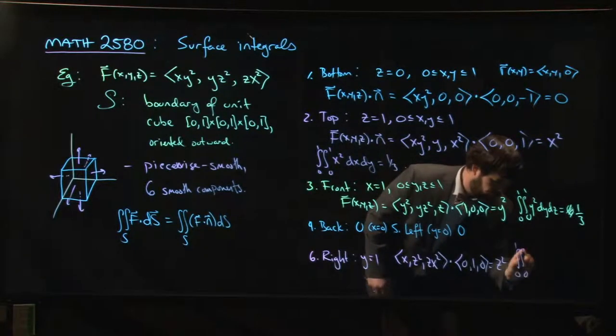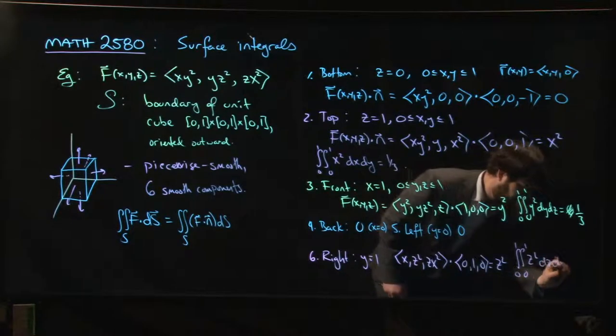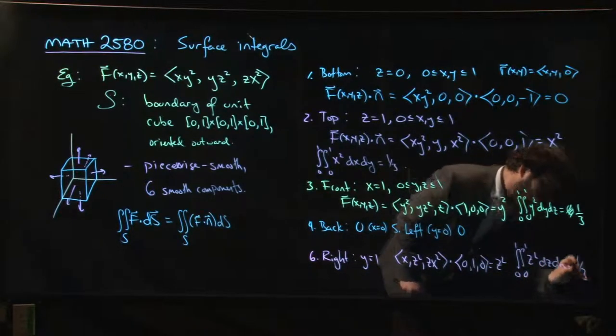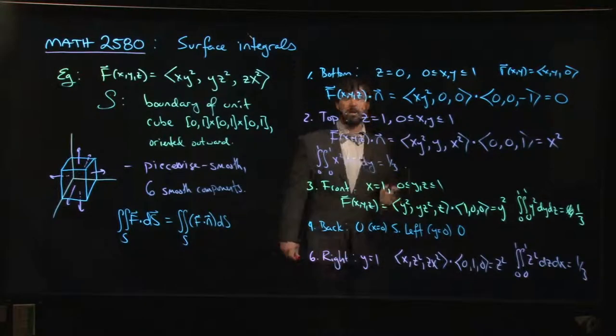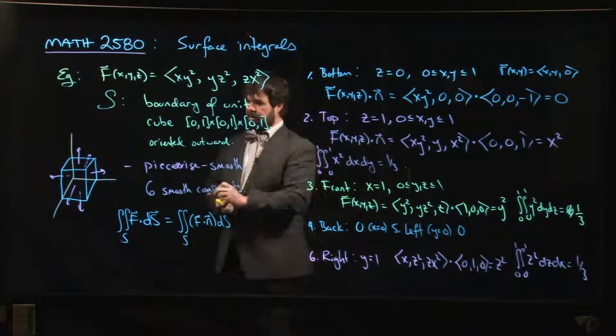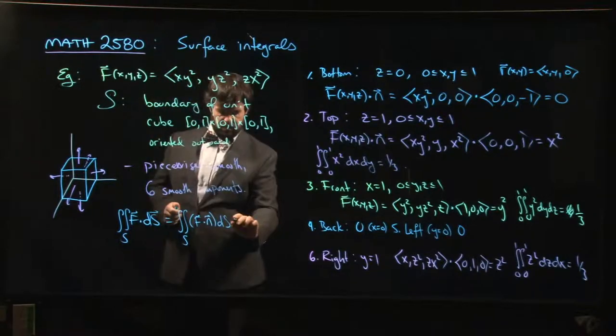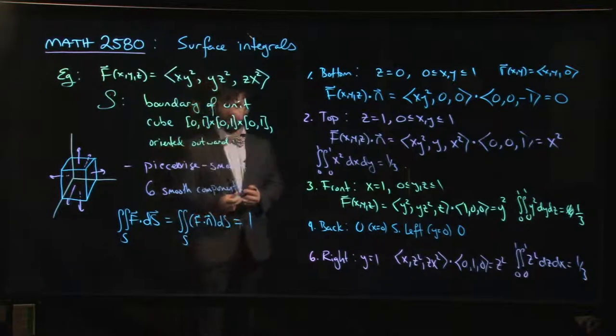We get zero to one, zero to one, z² dz dx, and we get another one third. So the total flux, we add up the contribution from all six faces: one third plus one third plus one third, we get one for the total.